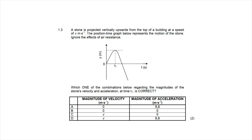Question 1.3: a stone is projected vertically upwards from the top of a building at speed v m/s. The position-time graph represents the stone's motion, ignoring air resistance. We must determine the stone's velocity and acceleration at time t₁. Since the stone is a projectile throughout its motion, the acceleration is always 9.8 m/s² downward, so only options A or D are possible.